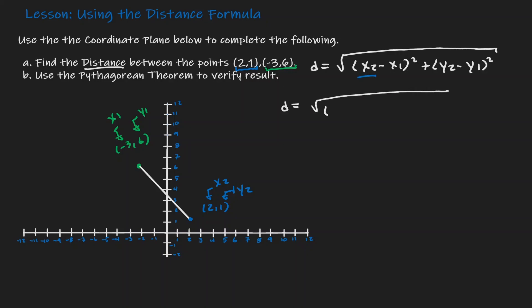Where x2 we already defined as 2, minus x1 which we are defining as negative 3, y2 which we are defining as 1, and y1 which we are defining as 6. Whatever this value is, this will be the distance between those two points, so it's just a matter of simplifying.